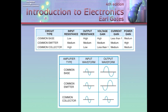Looking at the waveform diagrams: common base — you put in a small AC signal, you get out a large AC signal. Common emitter — you put in a small AC signal, you get out an inverted large AC signal. Common collector — you put in a small AC signal, you get out a signal that's slightly smaller than what you put in. But the benefit is medium current gain, which you may need to drive another device. Different configurations for different applications — all transistors are not put in the circuit the same way.